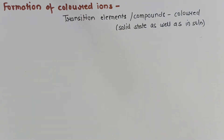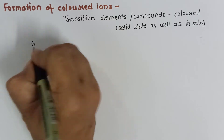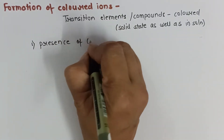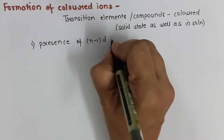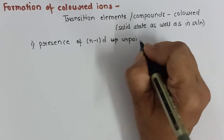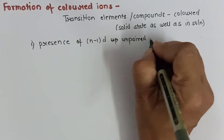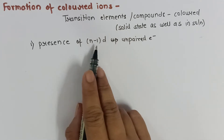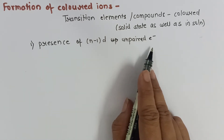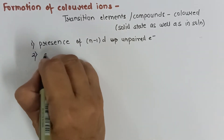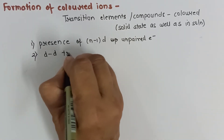The first reason behind transition elements showing color is the presence of n-1 unpaired electrons. The d orbital is not completely filled in transition elements, so there are some unpaired electrons left in n-1 d, and that is the reason for the color. Secondly, these unpaired electrons show d-d transition.